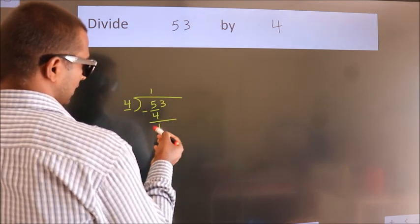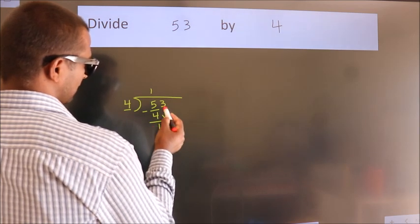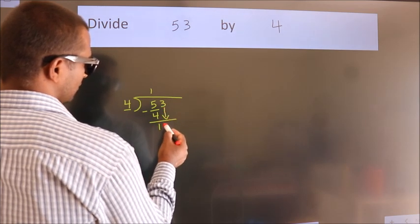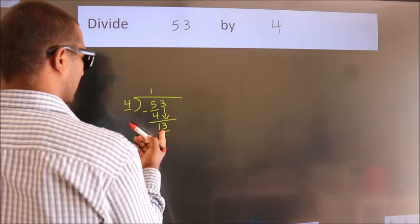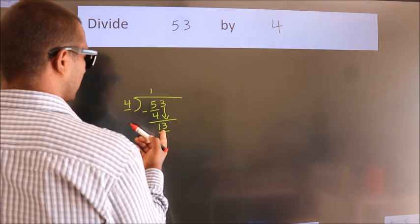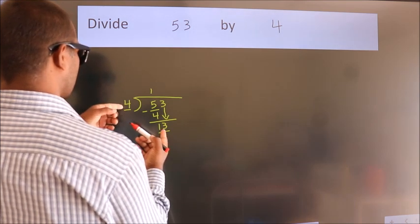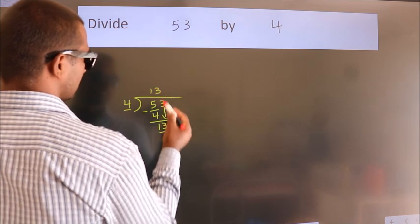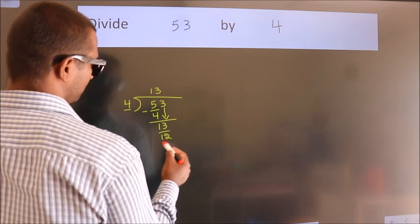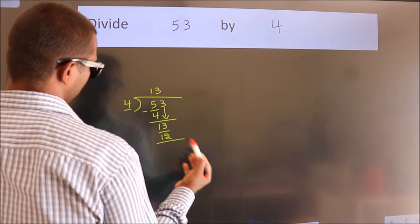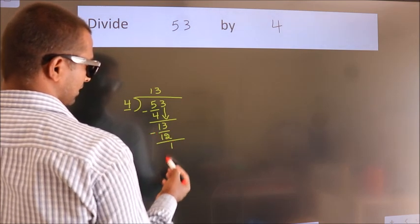After this, bring down the beside number. So, 3 comes down — so, 13. A number close to 13 in the 4 times table is 4 threes is 12. Now we subtract. We get 1.